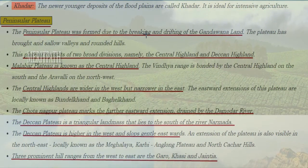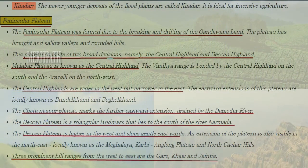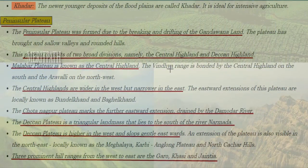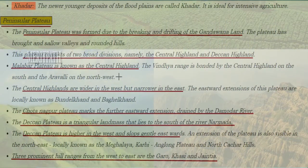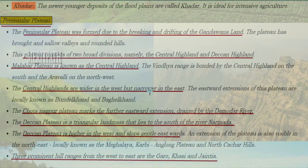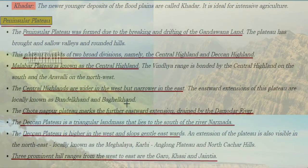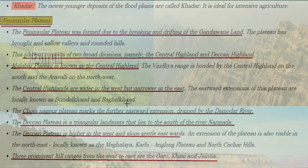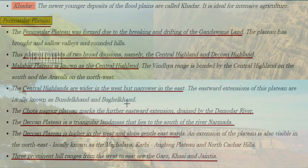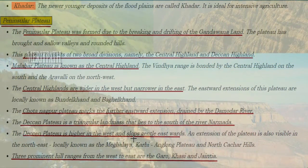The Peninsular Plateau was formed due to the breaking and drifting of the Gondwana land. The plateau has broad and shallow valleys and rounded hills. It consists of two broad divisions: the Central Highlands and the Deccan Plateau. The Central Highlands are bounded by the Vindhya Range in the south and the Aravalli in the north-west, wider in the west and narrower in the east. The eastward extensions are locally known as Bundelkhand and Baghelkhand, while the Chhota Nagpur Plateau marks the further eastward extension, drained by the Damodar river.